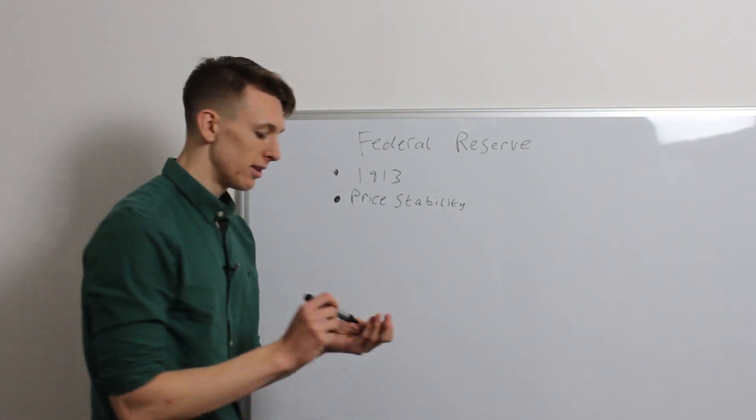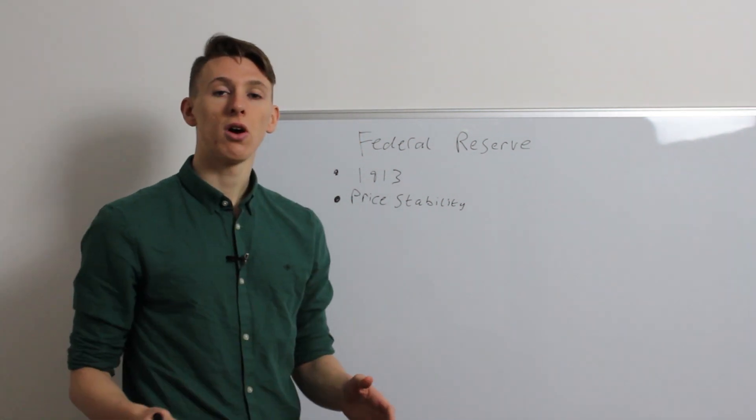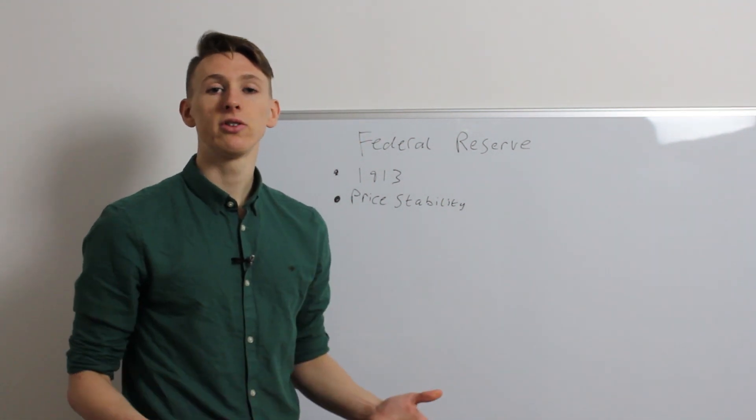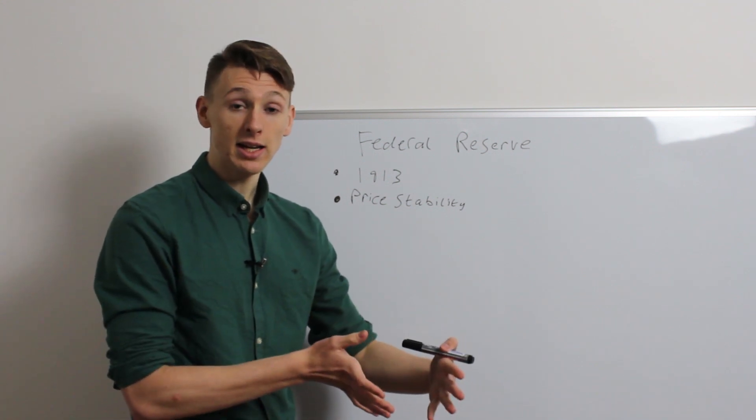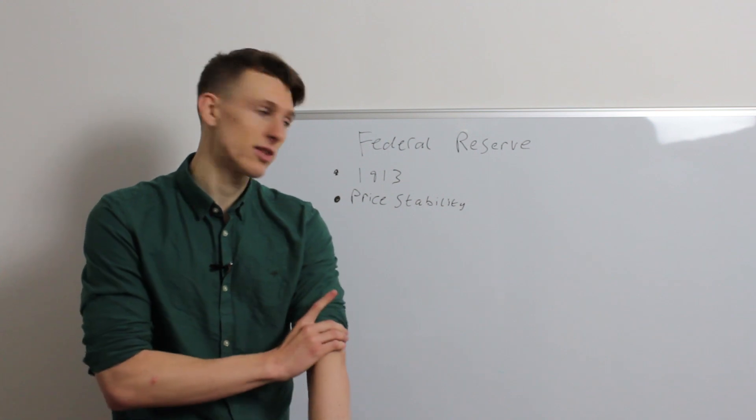Now, what does that mean? That means the cost of any good, say 100 grams of chicken, is going to be the same today as it is tomorrow. That's price stability.